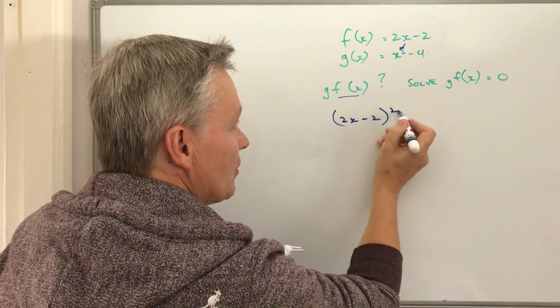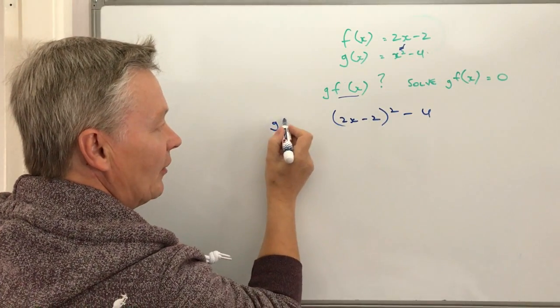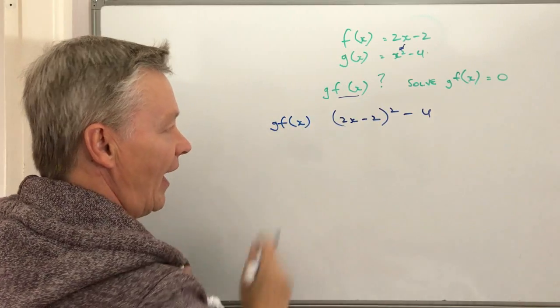So that's going to be squared and we're going to minus 4, and when we put those outputs together we're going to end up with the g f of x.